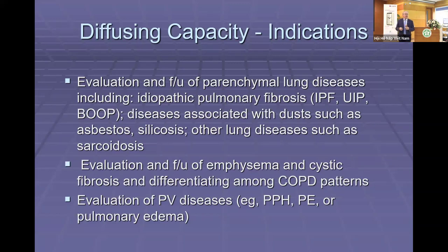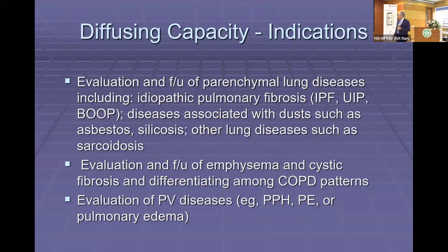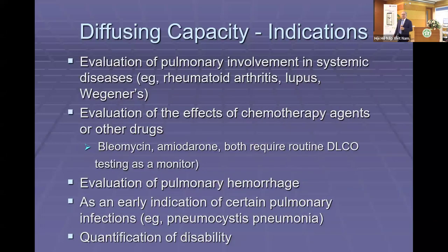We also remember that this is the alveolar-capillary interface, so it can be used in the evaluation of diseases that affect capillary or pulmonary vascular blood flow — primary pulmonary hypertension, pulmonary emboli, and pulmonary edema. It can also be used in systemic diseases that affect the lung parenchyma like Wegener's or lupus, and in the evaluation of the effects of medicines on the lungs like bleomycin or amiodarone.